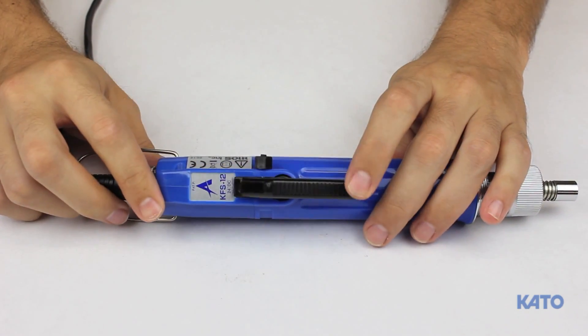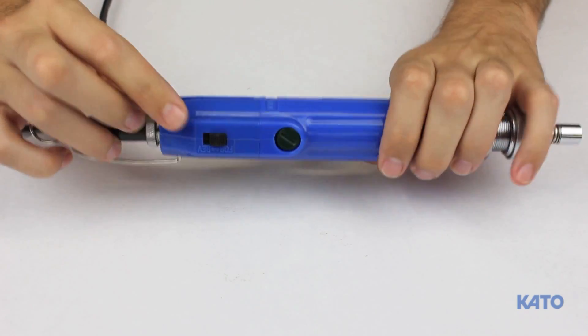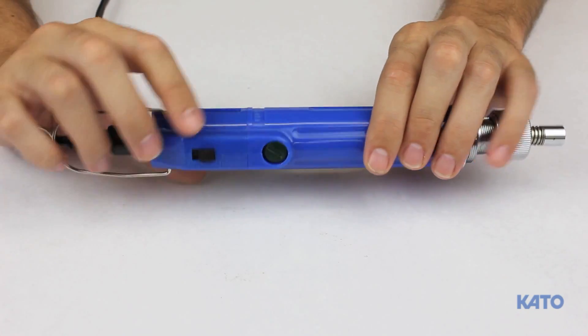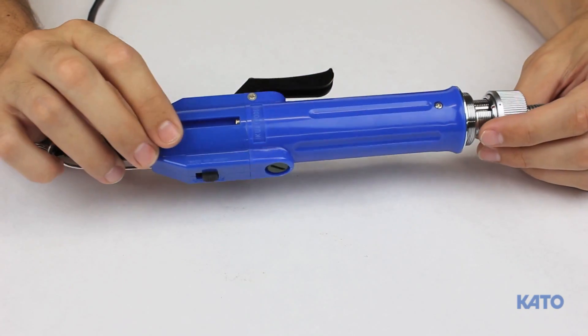Here you have the trigger. And on the back there is a switch for forward and reverse. Even though this is an automatic reversing tool, in case you ever need to use the manual reverse, here is the switch.